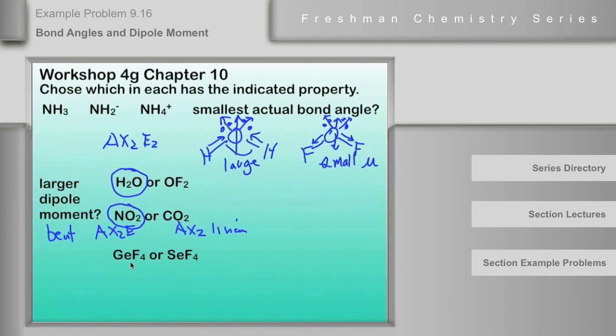Let's look at the last one. And GeF4 is an AX4 case. And we noticed that all of the cases, the polarity of all of the shape classes where you had the same atoms and atoms and no lone pairs, nonpolar. AX2 is nonpolar. AX3 is nonpolar. AX4 is nonpolar. AX5 is nonpolar. And AX6 is nonpolar. So AX4 is one of those that's nonpolar.